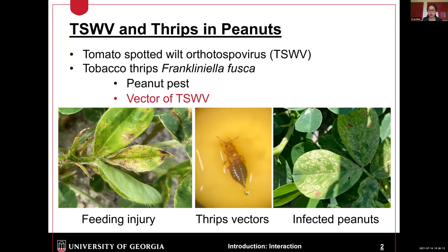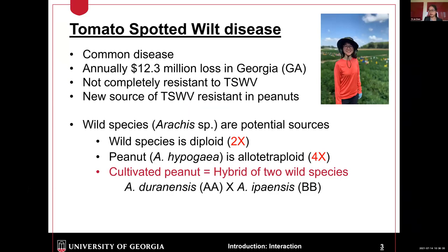We can see the feeding damage and feeding injury in the field. Also, infected peanut is common in the field — we can see symptoms like concentric green spots. TSWV, tomato spotted wilt disease, is a pretty common disease in Georgia. It causes economic loss: about 12 million dollars in loss in Georgia every year.